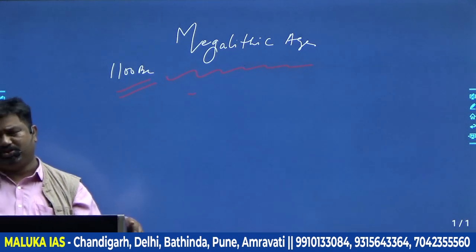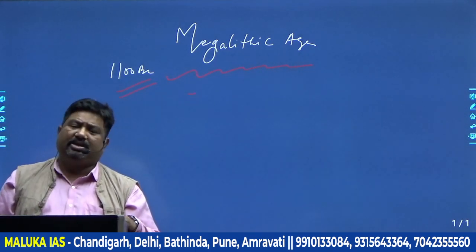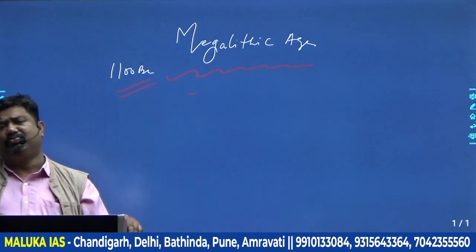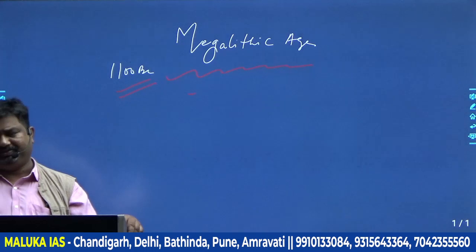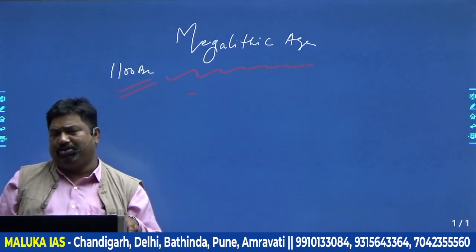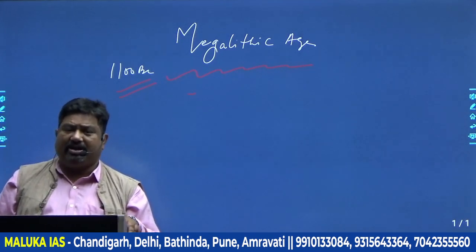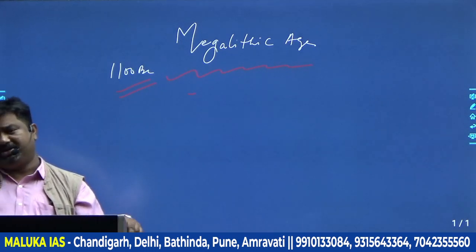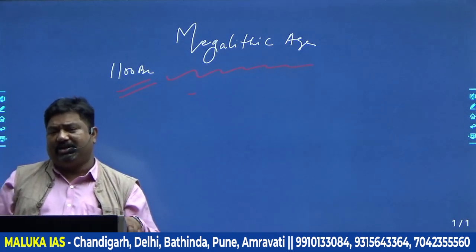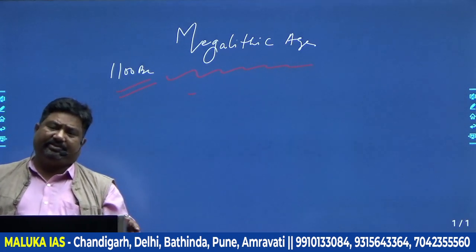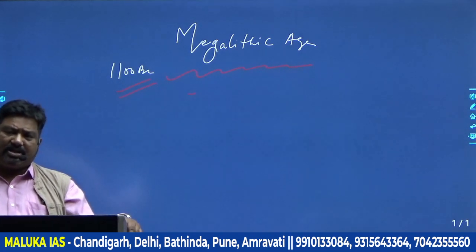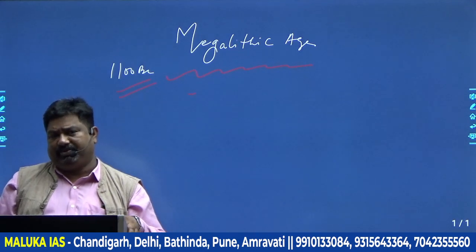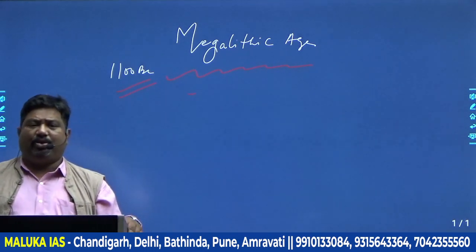We do not know who these people were. This megalithic civilization prevailed in Europe, in America, and in different parts of the world. But in India, why should it be known for, and why are megalithic people so important? Around 1100 BC, we find settlements near the lakes of southern India and the Deccan area — burial settlements.